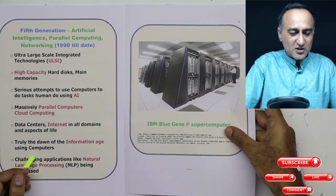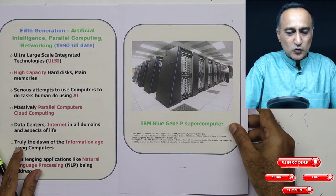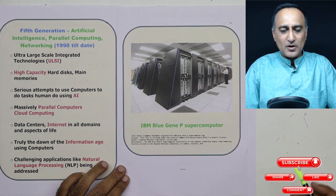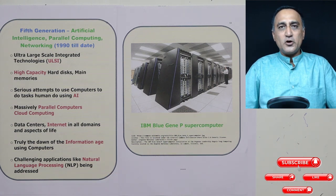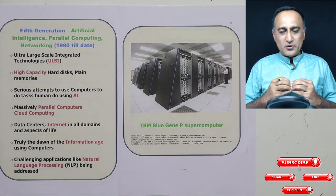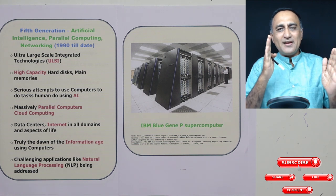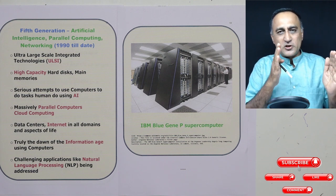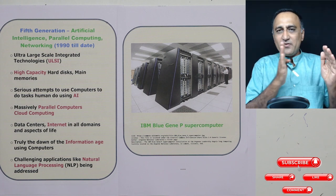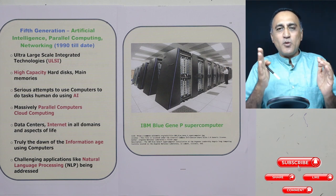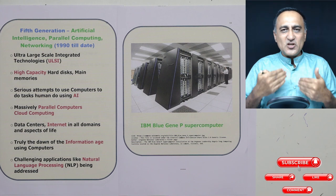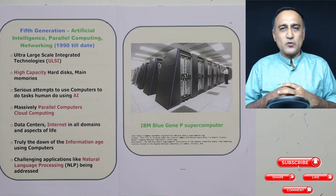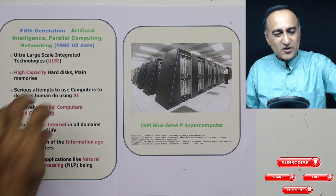A prime example of a fifth-generation computer is the IBM Blue Gene supercomputer, with a large number of processors and memory devices — an extremely powerful machine. To summarize, we went from machine language to assembly to high-level languages, from vacuum tubes to transistors to ICs, from high cost and large size to lower cost and smaller size, and from use in big companies to homes and everywhere. Artificial intelligence, natural language processing, and the internet are the major focus of the current generation.